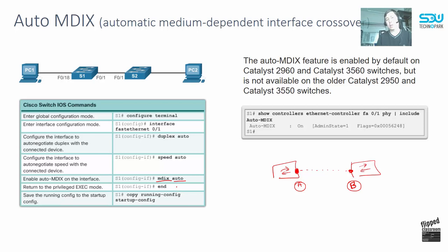To change the Auto-MDIX configuration, type 'mdix auto' — or if you want to turn it off, type 'no mdix auto.' To verify whether an interface supports this function and has it enabled, type 'show controllers ethernet-controller fa0/1 phy | include Auto-MDIX' and you will see that Auto-MDIX is turned on for that port.